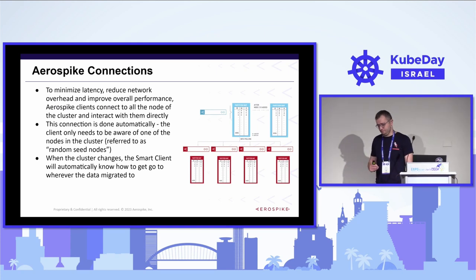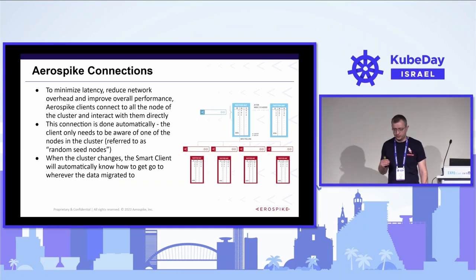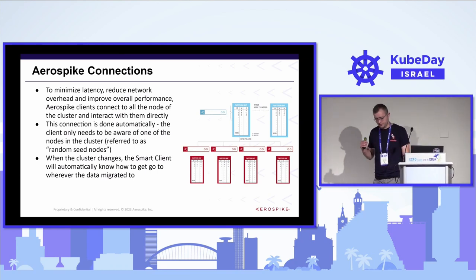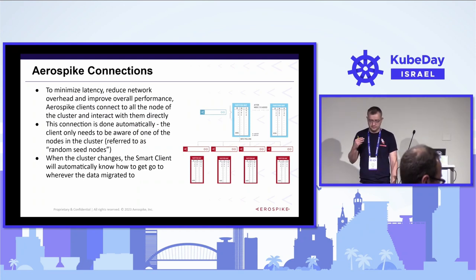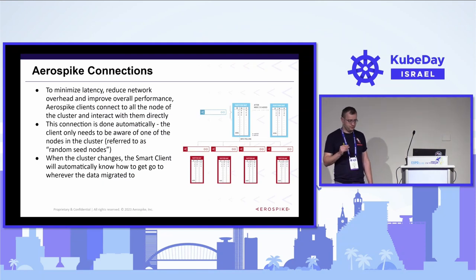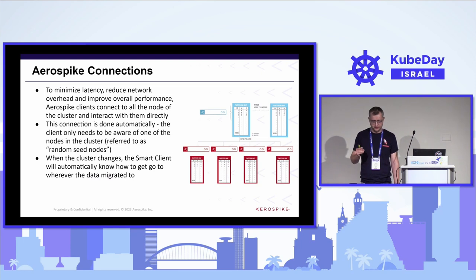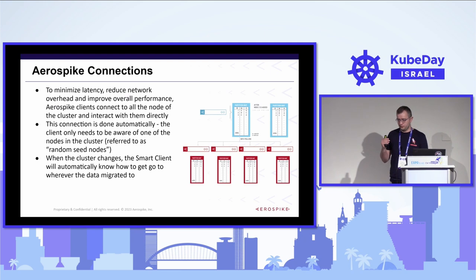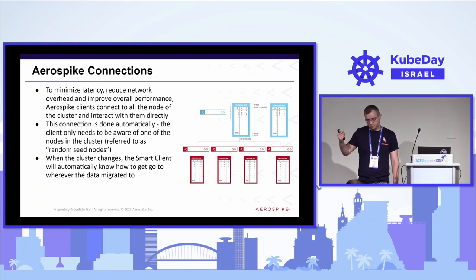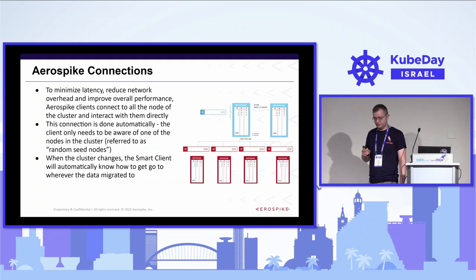AeroSpike implements a very interesting communication model between the server and its client libraries. We call it smart clients. Those clients have business logic that, given some data key, figures out the specific node where the data resides on the cluster. For that, it needs to maintain a direct connection to each of the nodes of the database cluster. The library user just needs to provide one IP, and then our library interacts with that specific node, which figures out all the network topology and sends it back as a response to the client library.